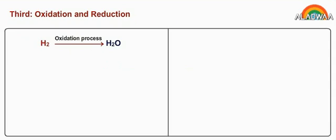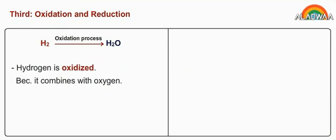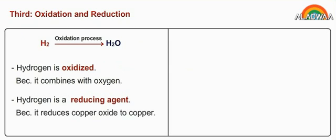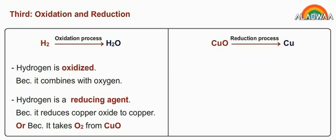H2 oxidation process produces H2O. Hydrogen is oxidized because it combines with oxygen. Hydrogen is a reducing agent because it reduces copper oxide to copper because it takes O2 from CuO, which produces Cu.